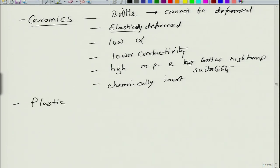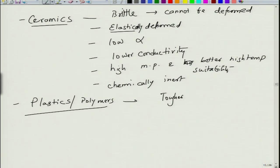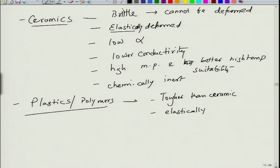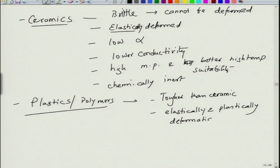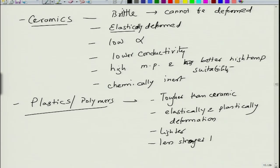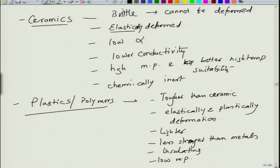Plastics or polymers are tougher than ceramics, though they may or may not be tougher than metals. They can be both elastically and plastically deformed, so you can convert them into different shapes. They are lighter but less strong than metals, insulating in most cases, and have low melting points. So plastics are suitable for low-temperature applications requiring moderate strength — for example, things like buckets.